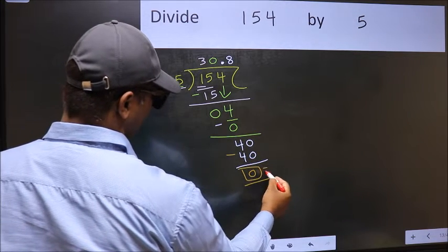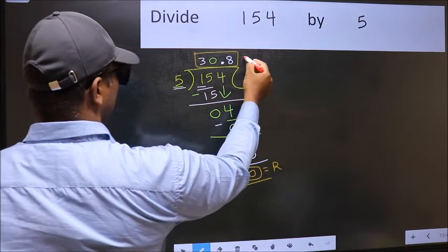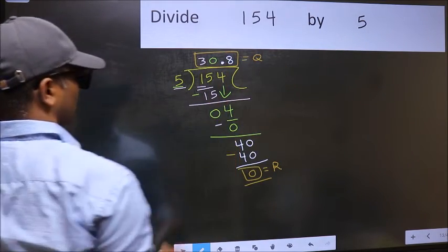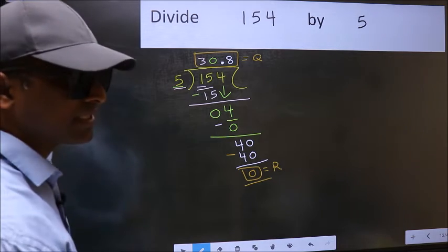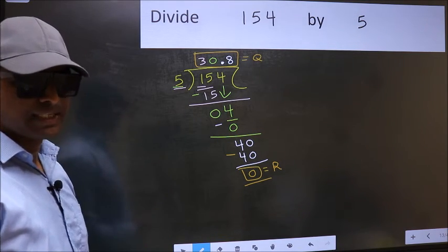So this is our remainder and this is our quotient. Did you understand where the mistake happens? You should not do that mistake.